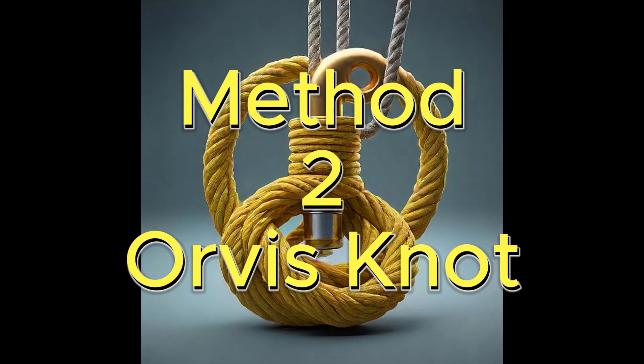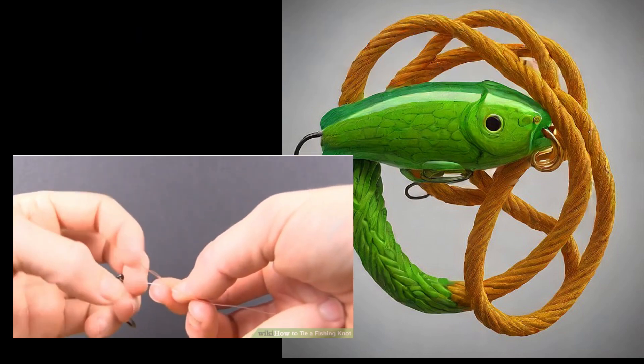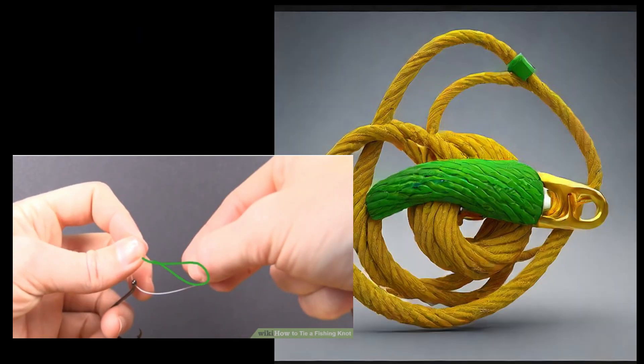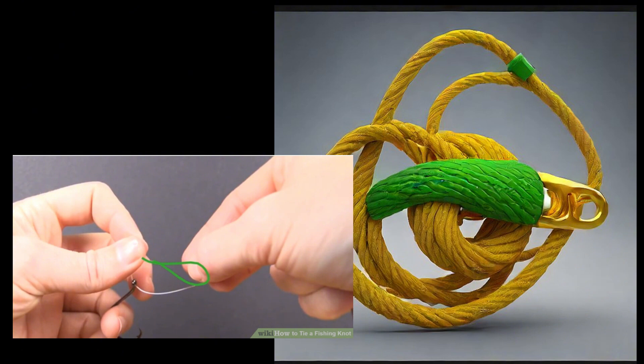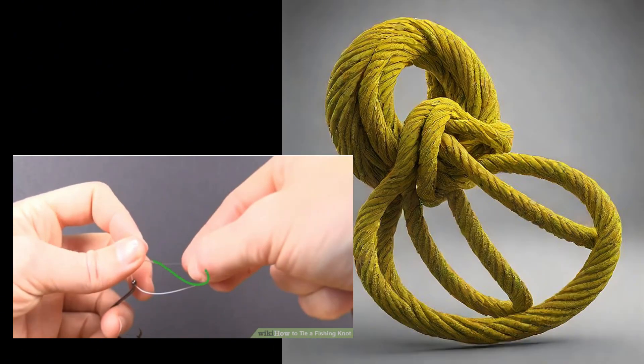Method 2: Orvis Knot. Step 1: Use the Orvis Knot as a strong and easy alternative to the clinch knot. Pass a line through the hook eye from below. Twist the tag end behind the main line to form a loop. Go behind the loop and forward with the tag end to create a figure 8 shape.